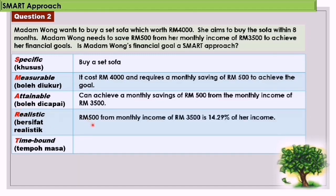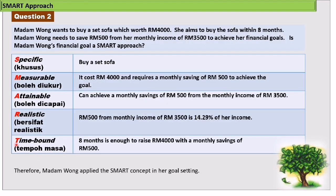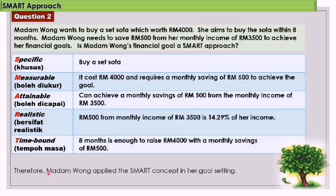R - Realistic: RM500 from a monthly income of RM3,500 is 14.29% of her income. T - Time-bound: 8 months is enough to raise RM4,000 with a monthly savings of RM500. Therefore, Madam Wong applied the SMART concept in her goal setting.